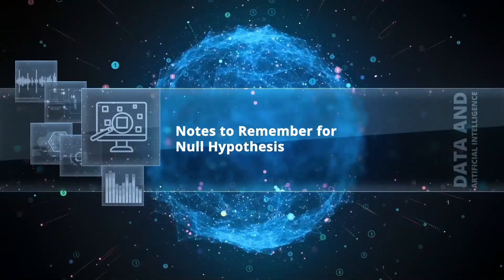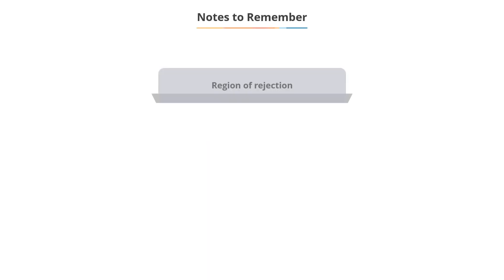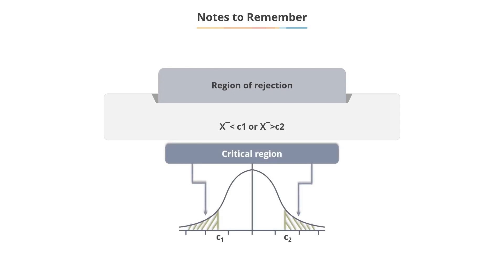Notes to remember for null hypothesis: In general, the region of rejection, that is when x-bar is less than c1 or x-bar is greater than c2, is referred to as the critical region, the region of rejection of null hypothesis.